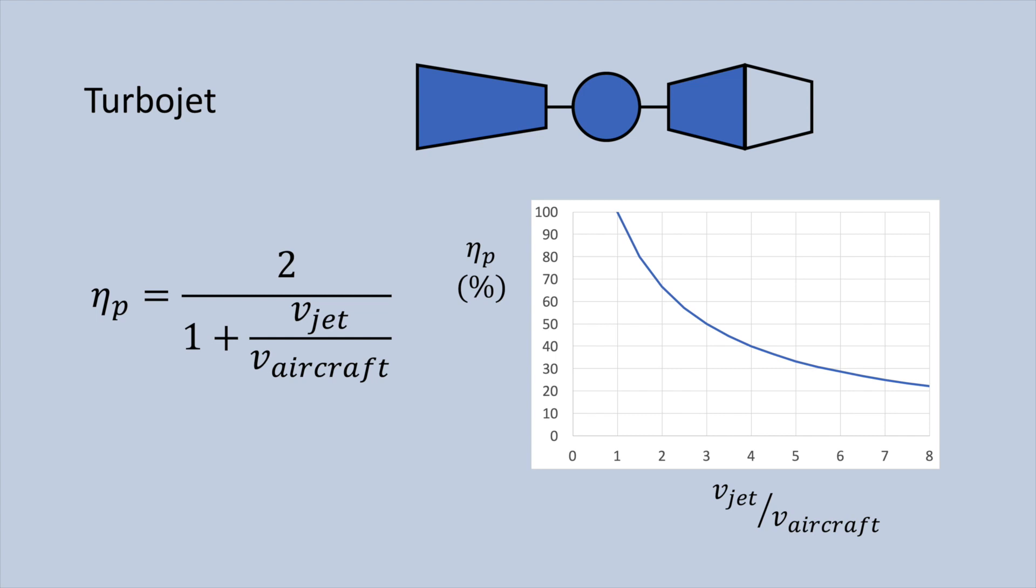Thus, to maximize this for slower aircraft, it is important to reduce the velocity of this jet, but to maintain the same thrust, the area of the jet needs to increase as its velocity decreases.